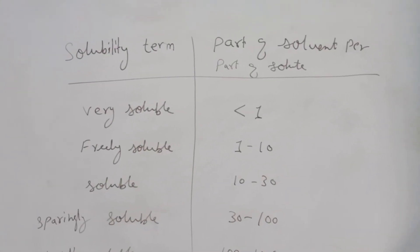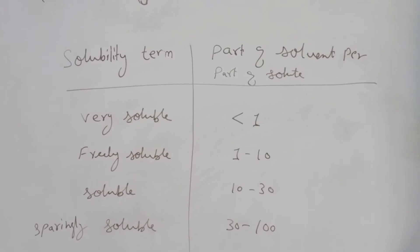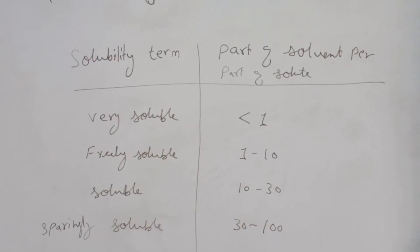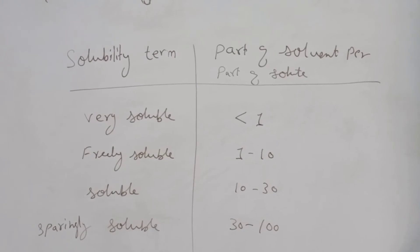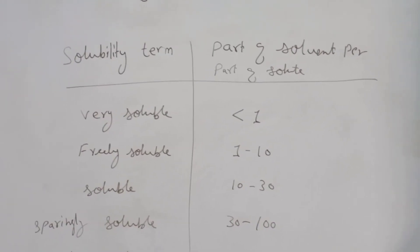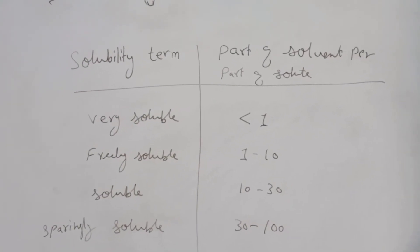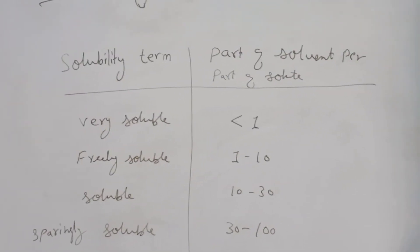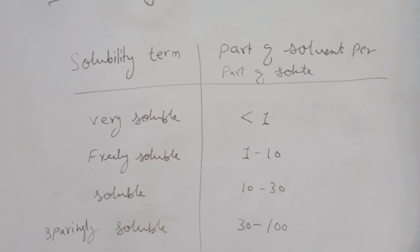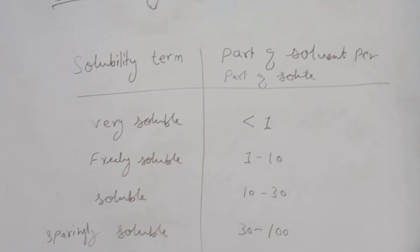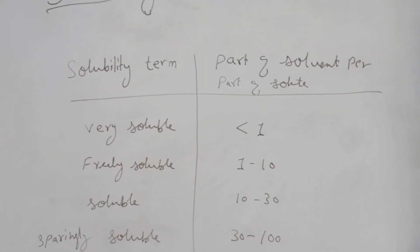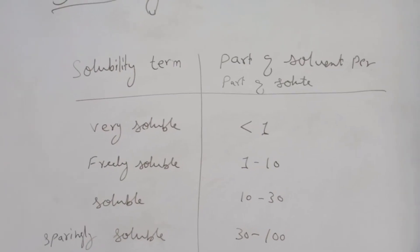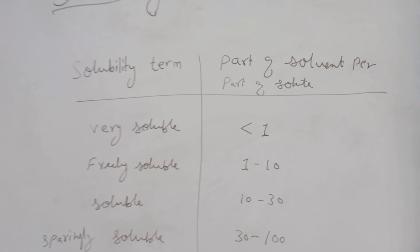A solute is said to be very soluble if it requires less than one part of solvent to get dissolved. Such a solute is said to be very soluble in that particular solvent because it requires less than one part of solvent to dissolve.